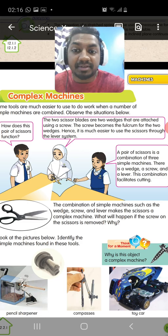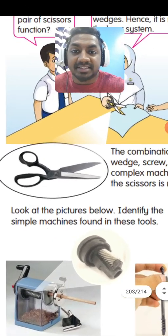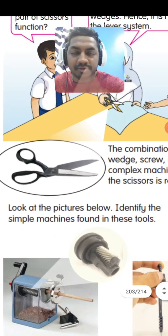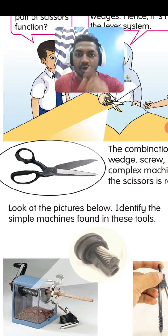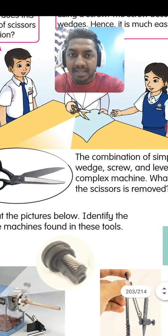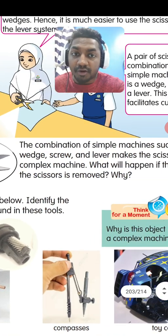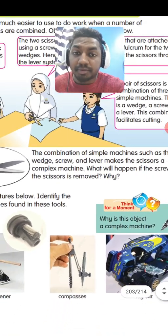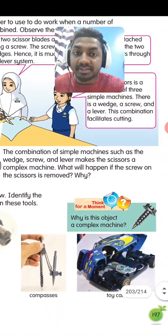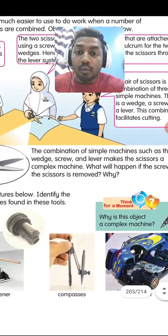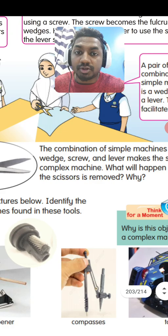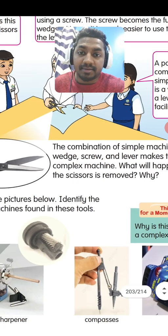As an example, let's look at the scissors. The scissors has a combination of simple machines such as wedge, screw, and lever.